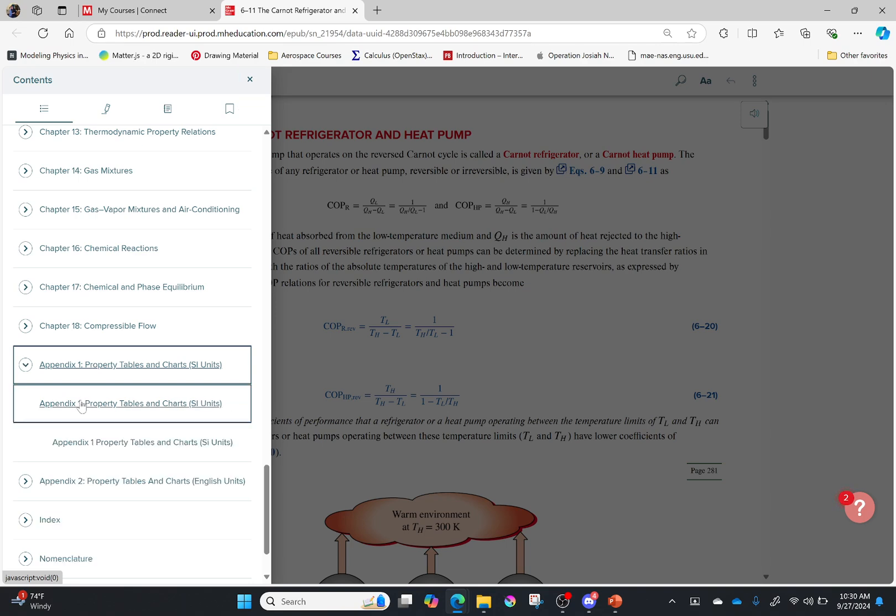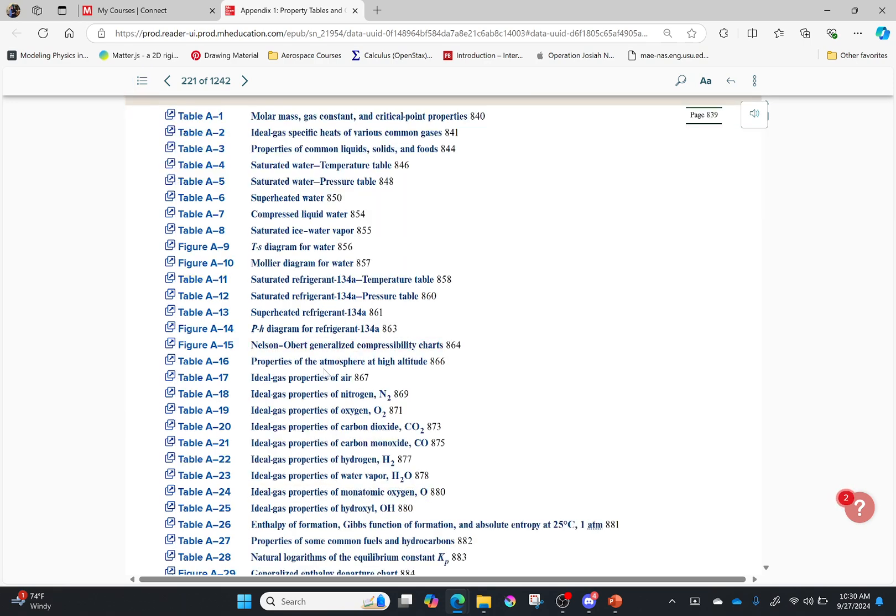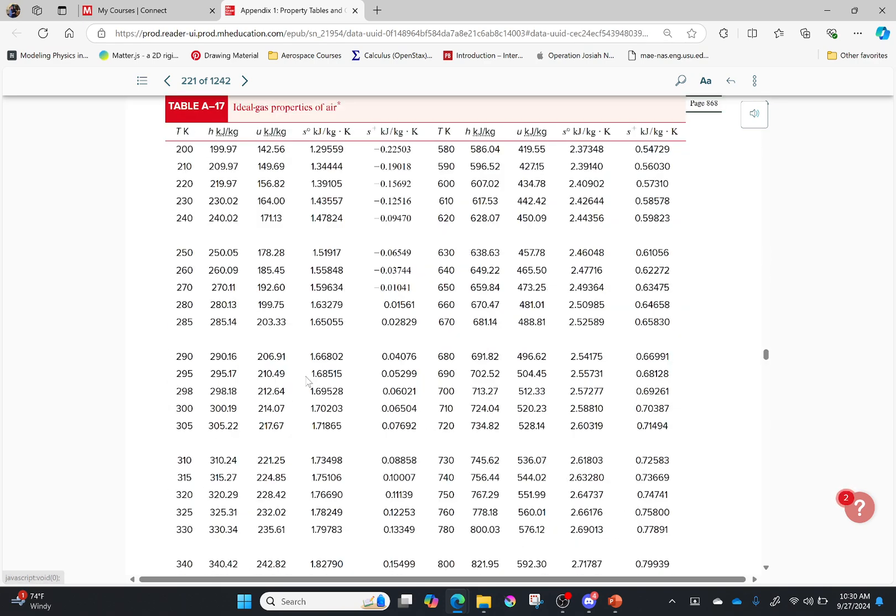So I'm going to go down here to appendix 1. And I already helped you out because I told you it was table A17. What is that? That's simply the ideal gas properties of air. And what does that specifically mean? Well if I click on it you'll see.